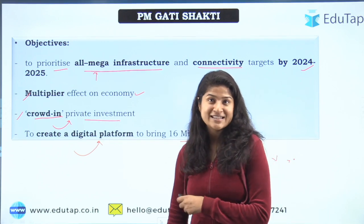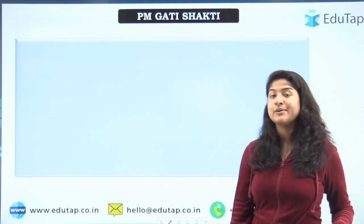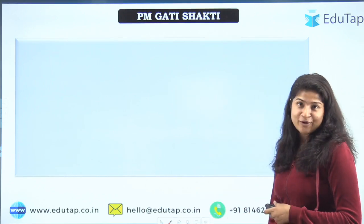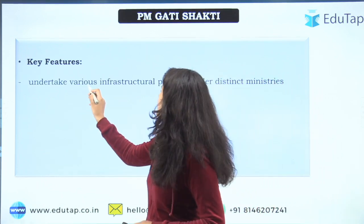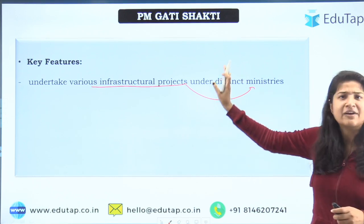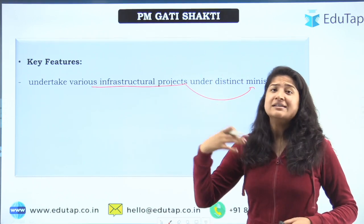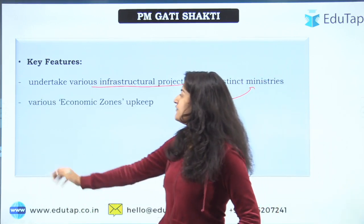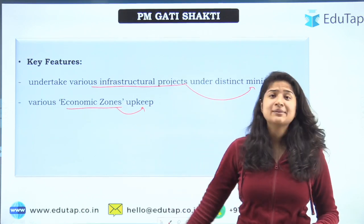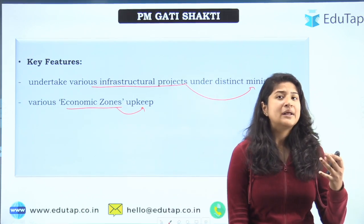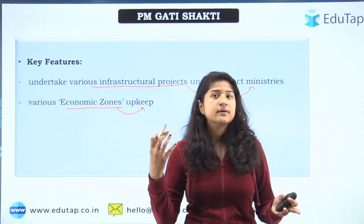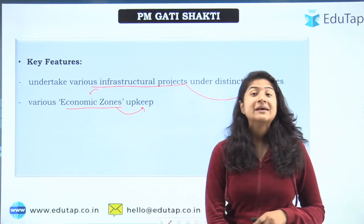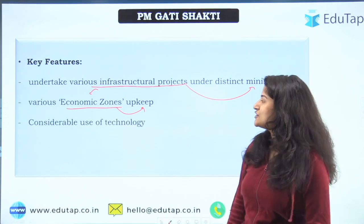Now we will look at the key features of this scheme. These objectives and key features are important for Phase 2 of your examinations. The first key feature is to undertake various infrastructure projects under different ministries — for example, Bharat Mala, Sagar Mala, inland waters — everything clubbed together. Next is various economic zones: agriculture zones, defense corridors, textile corridors — all economic zones would be synchronized.